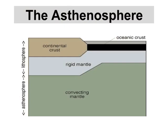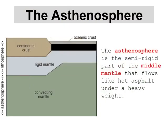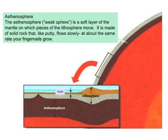The asthenosphere is the semi-rigid part of the middle mantle that flows like hot asphalt under a heavy weight. The asthenosphere, or weak sphere, is a soft layer of the mantle on which pieces of the lithosphere move. It is made of solid rock that, like putty, flows slowly at about the same rate your fingernails grow.